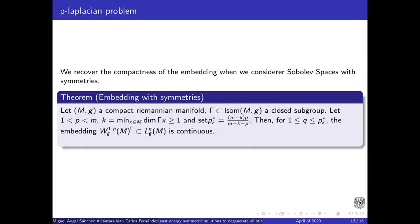And we recover the compactness of the embedding when we consider Sobolev spaces with symmetries. We have the next theorem, embedding with symmetries. Let (M,g) be a compact Riemannian manifold, Gamma a closed subgroup of isometries. And let p bigger than 1 and less than m. And k equals the minimum of the dimension of the Gamma orbit. So if Q is bigger than 1 and less than this number, this embedding is continuous. And furthermore, the embedding is compact if this number is less than p_Q*.